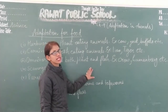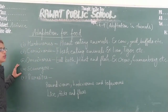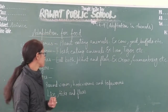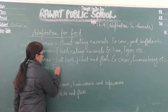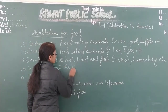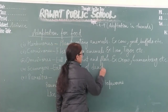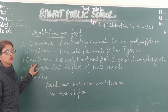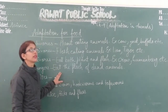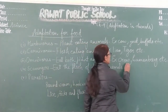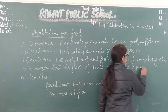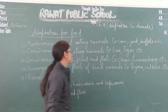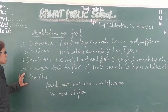The next category is scavengers. Scavengers eat the flesh of dead animals. They do not hunt animals for their food; they eat the flesh of dead animals or the remains of dead animals. Examples of scavengers are hyena, vulture, etc.